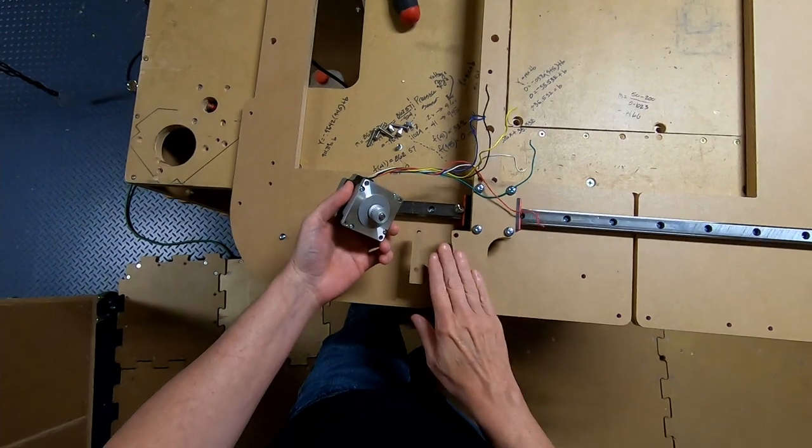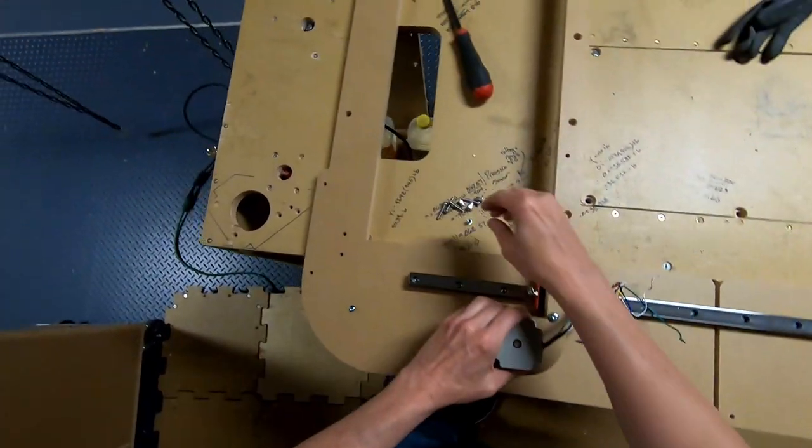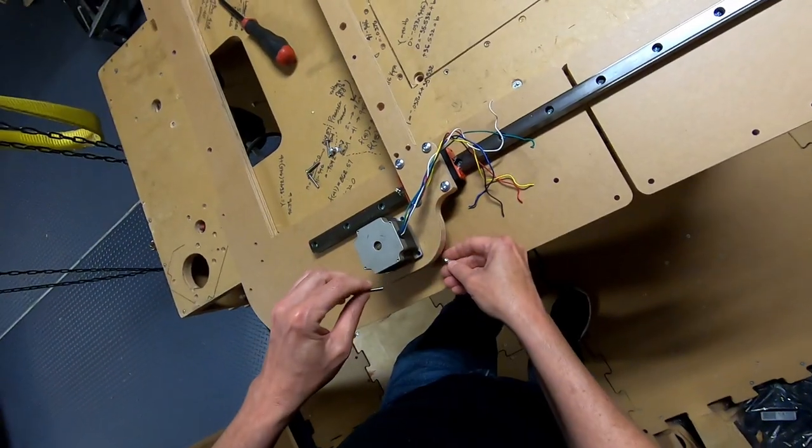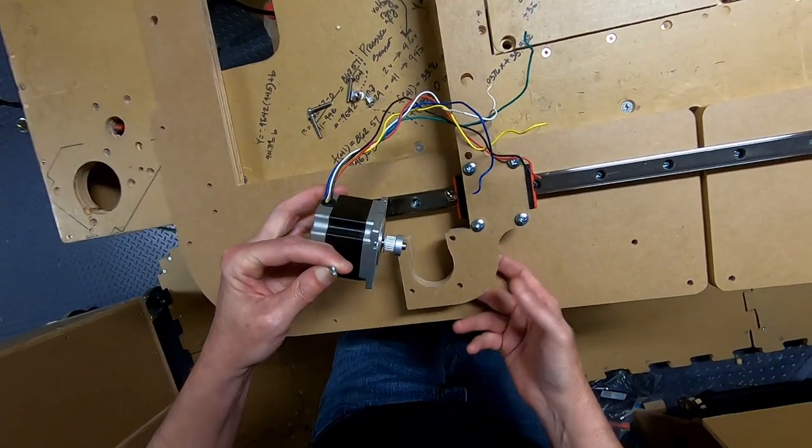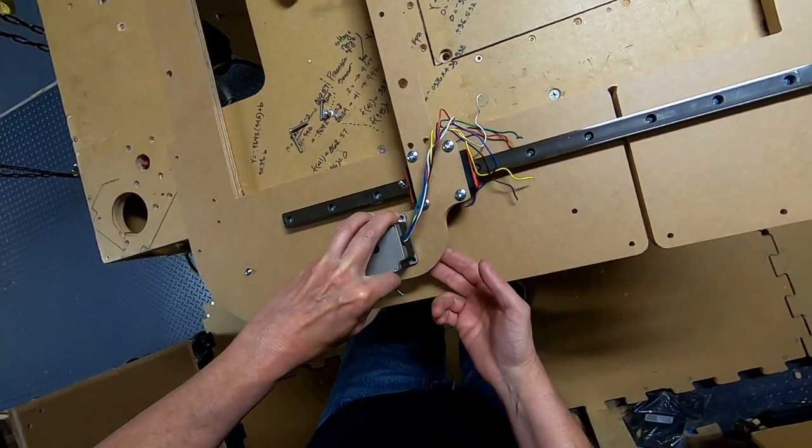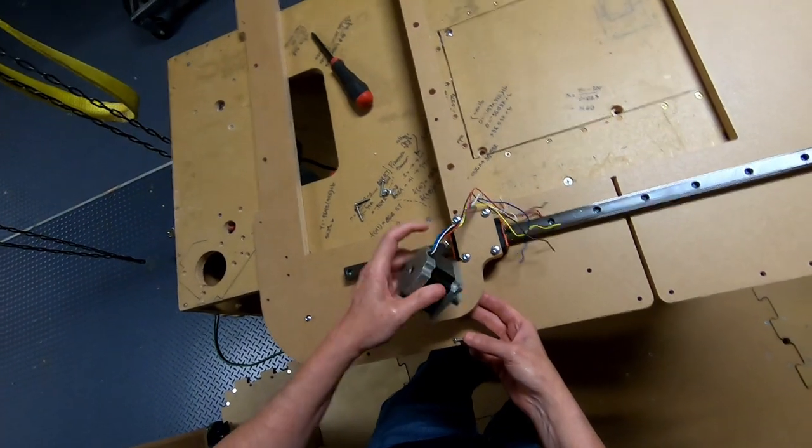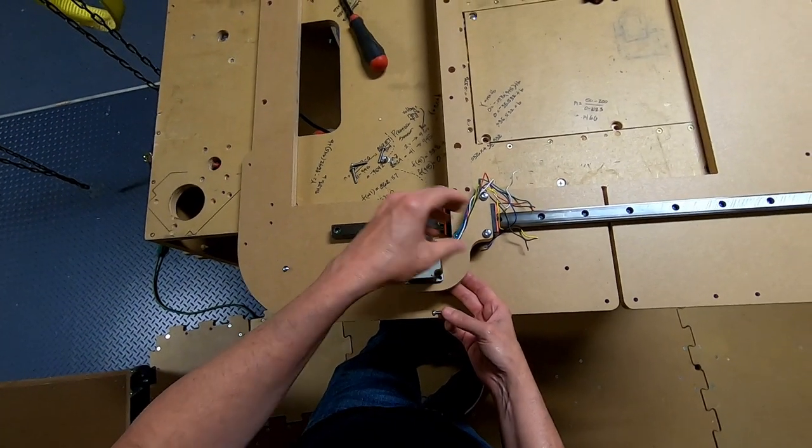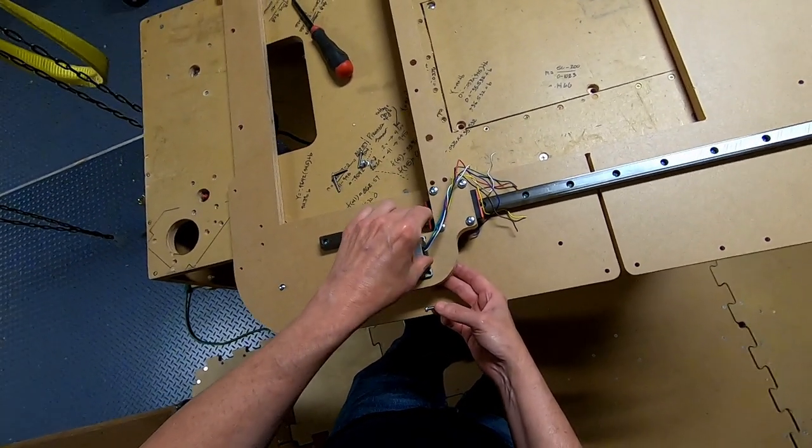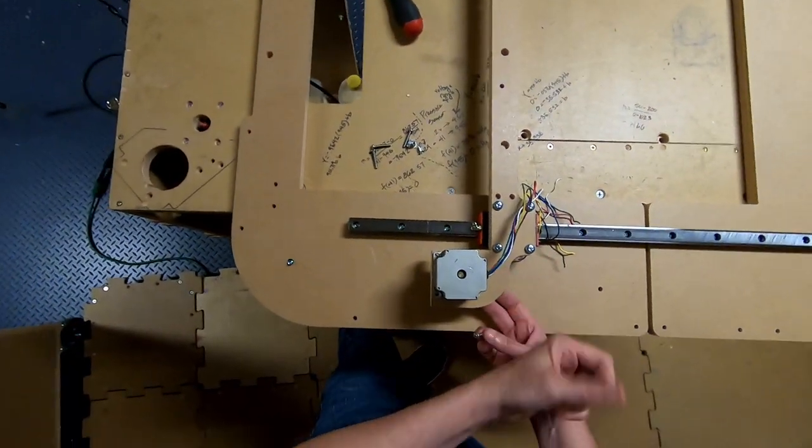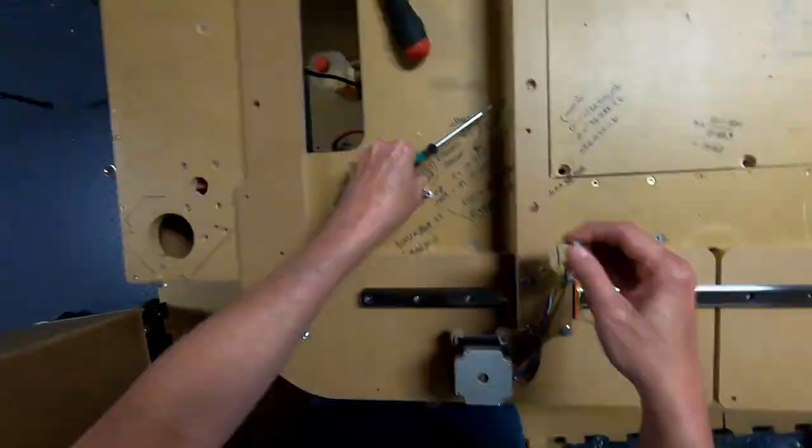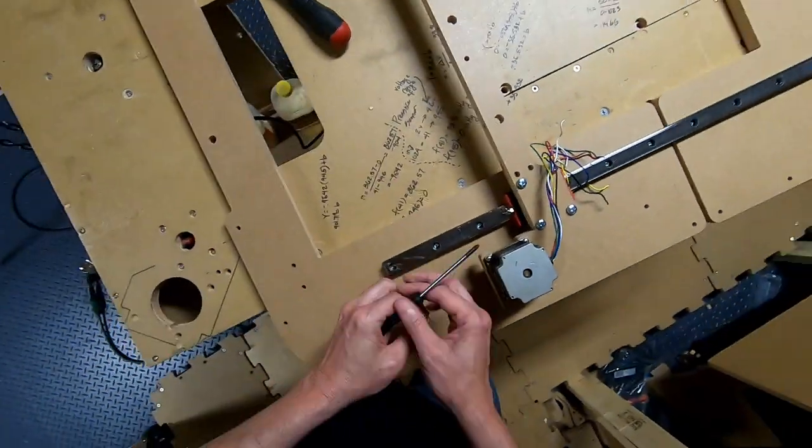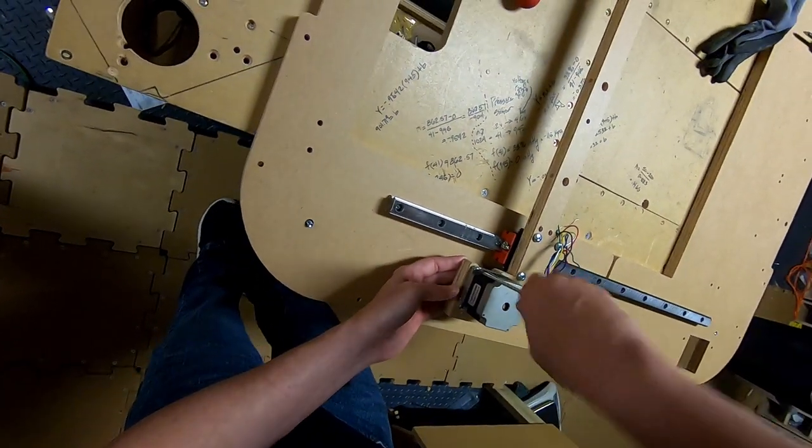The motor will be mounted to this part of the gantry and we'll use four number eight screws and four rivet nuts. The rivet nuts are going to go underneath into the hole like so. I'm orienting the motor so the wires come out this direction because the cable carrier will be receiving the cables of the cable carrier right here and it'll come in this direction.